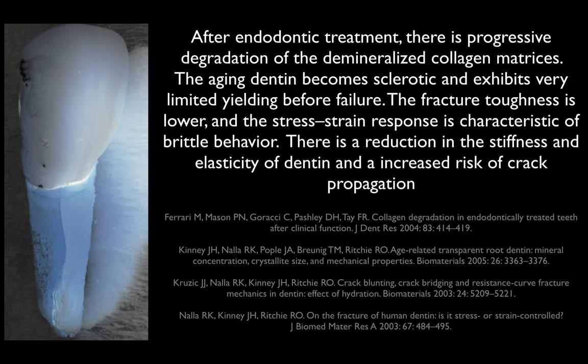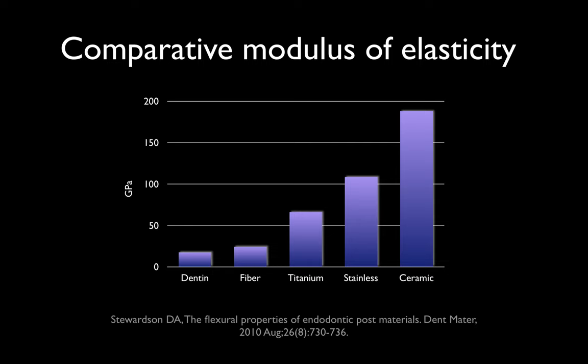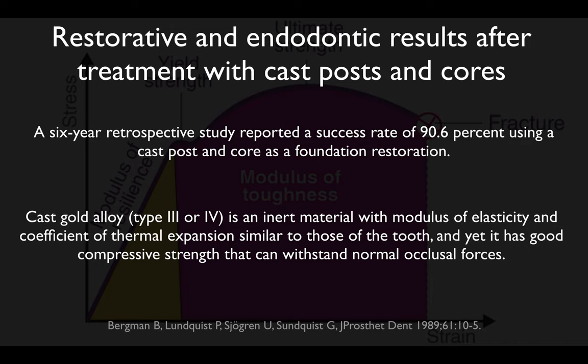Older, endodontically treated teeth may not be good abutments, and this is something to consider. One thing to consider is the modulus of elasticity — the modulus of elasticity of our posts should be as close to dentin as possible. This is why fiber posts are so popular. Titanium is the next best selection based on Stewardesson's study, and interestingly, gold and titanium are very similar in modulus of elasticity to tooth structure.